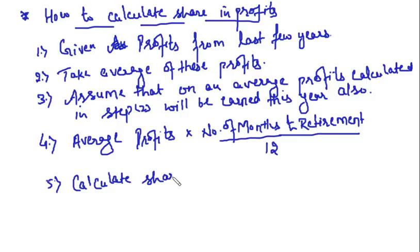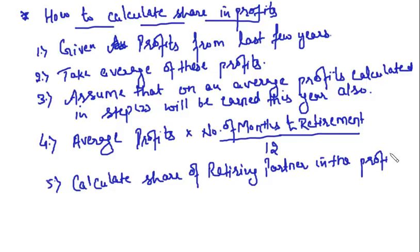Then calculate the share of the retiring partner in the profits calculated. So very simply: first you are given the profits for the last few years, take the average, assume that on an average this much profit will be earned this year also. Calculate for the number of months to retirement - average profits times number of months to retirement divided by 12 - and you get the profits for the period till the date of retirement. From that, calculate the share of the retiring partner.